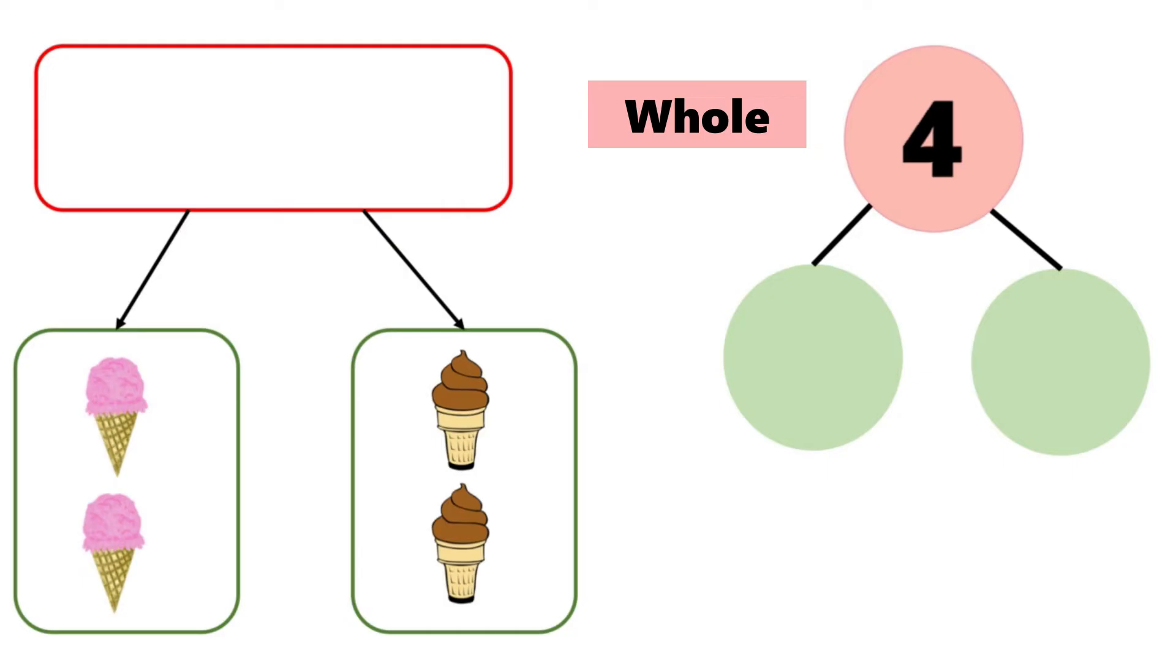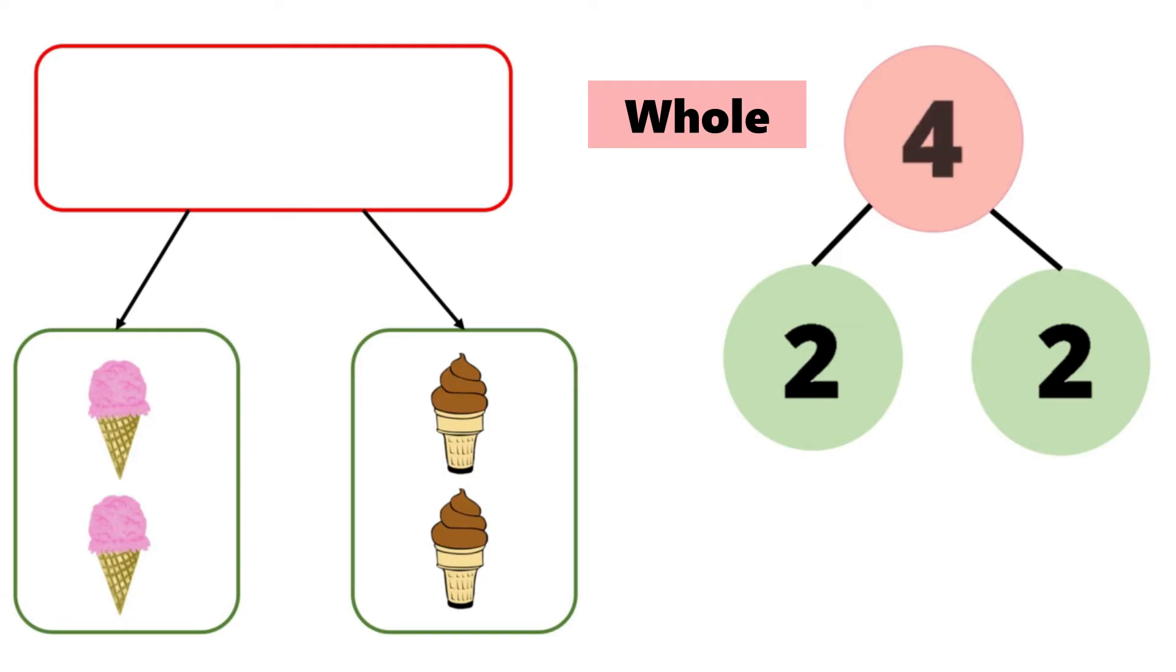How many strawberry ice creams are there? One, two. How many chocolates? One, two. So the number four can be broken up into two parts. Two and two.